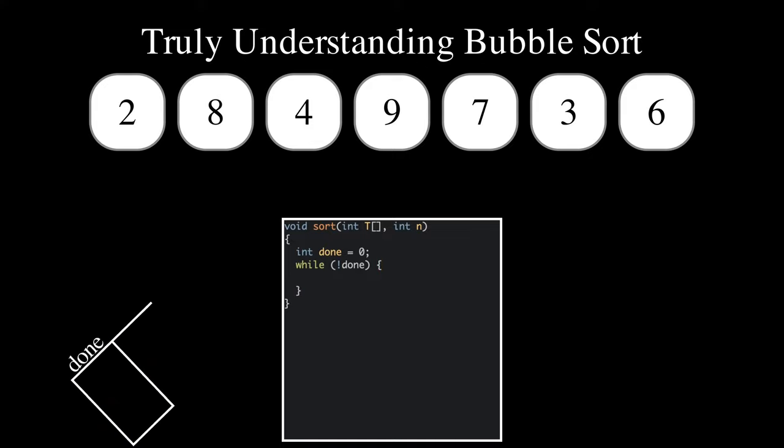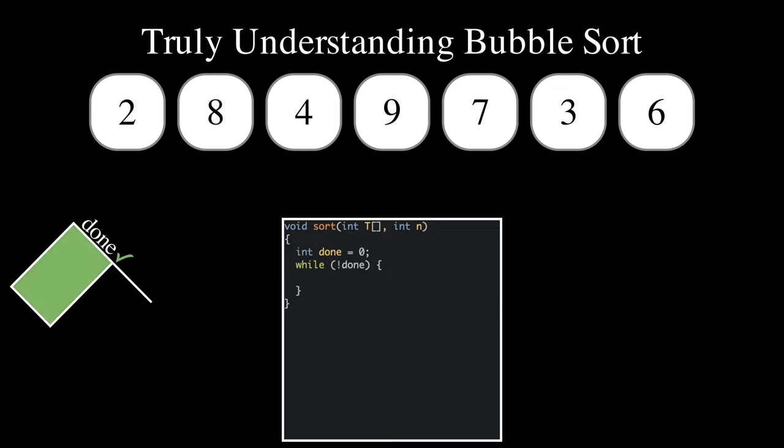Before starting the current pass, we optimistically assume that this will be the last pass, and therefore set the flag to one. We loop through all pairs of elements on consecutive positions by using an index called i that ranges from zero up to n minus two.